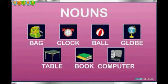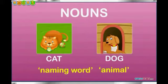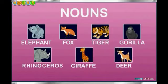Computer is also a noun. Cat and dog are naming words for animals. Similarly, elephant, fox, tiger, gorilla, rhinoceros, and giraffe are all names used for animals and are nouns.